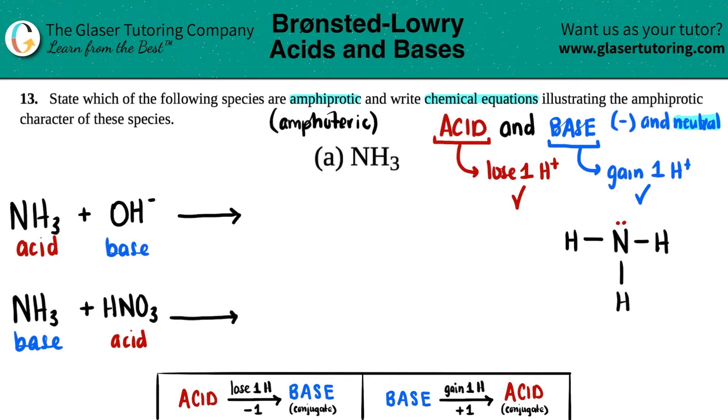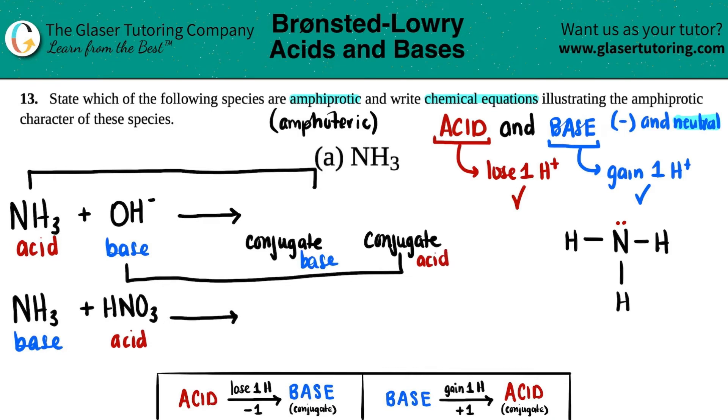Now we have our acids and bases ready to go. Let's make our products. Remember, any time you're starting off with an acid, it's going to lose that hydrogen and become the conjugate base. On the flip side, if you're starting off with the base, bases gain hydrogens so they become the conjugate acid. All we have to do is write out the conjugates of each.